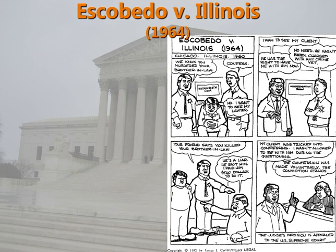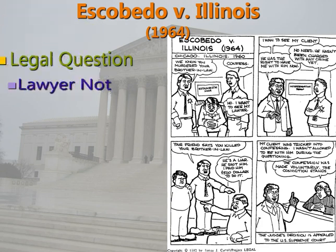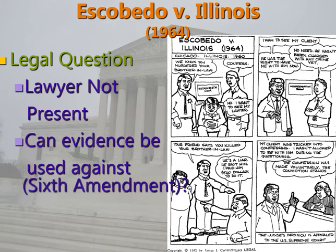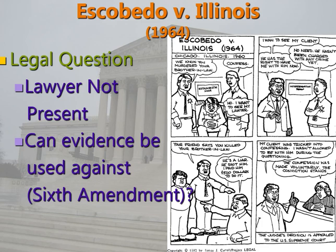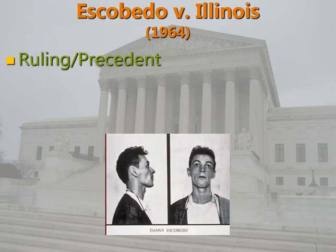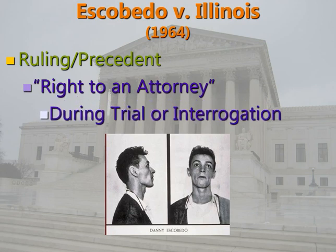Next is Escobedo v. Illinois in 1964. Escobedo was questioned without a lawyer present, and the question was whether that evidence could be used against him based on the Sixth Amendment. While Gideon established you must be provided a lawyer, Escobedo asked whether your lawyer must be present while you're being questioned. The Illinois court said that evidence could be used regardless. The Supreme Court disagreed, ruling that you have a right to an attorney at any point — not just at trial, but even during interrogation. Once again, the Warren Court expanded the rights of the accused.